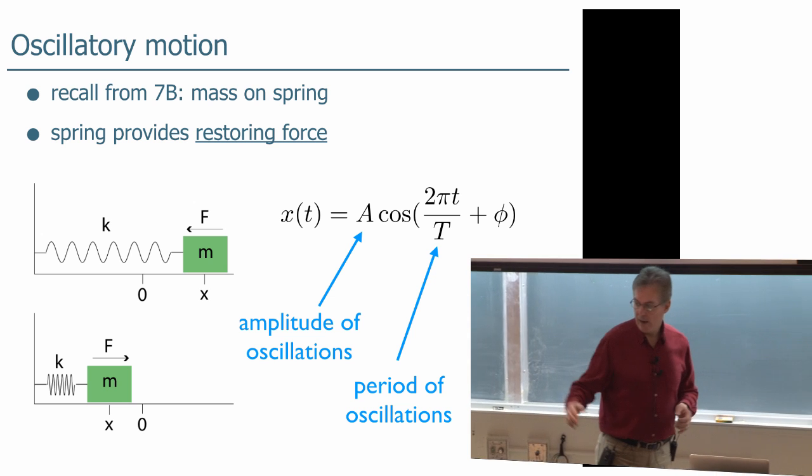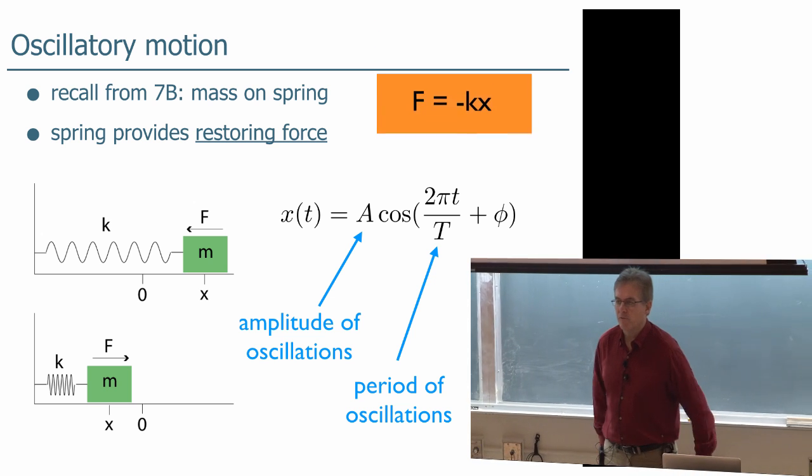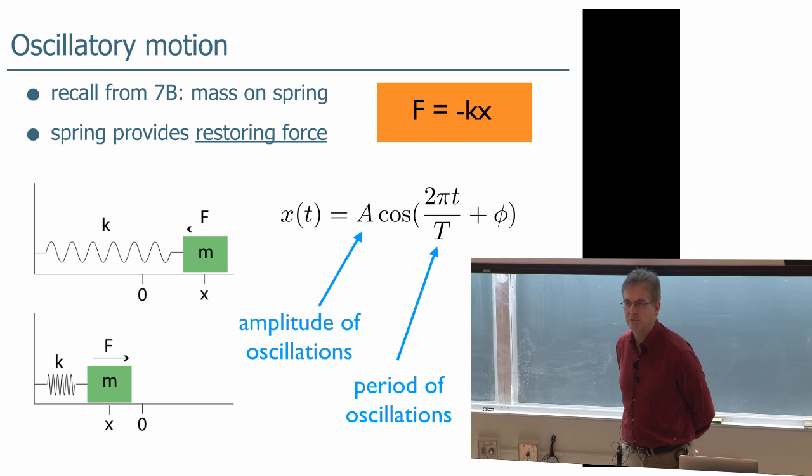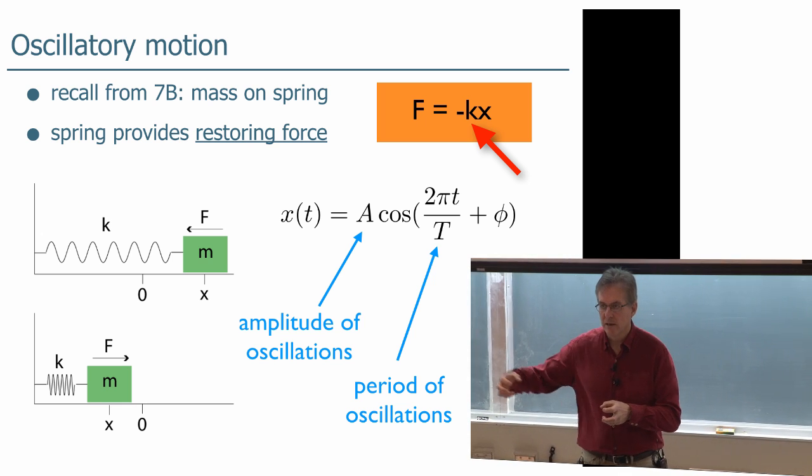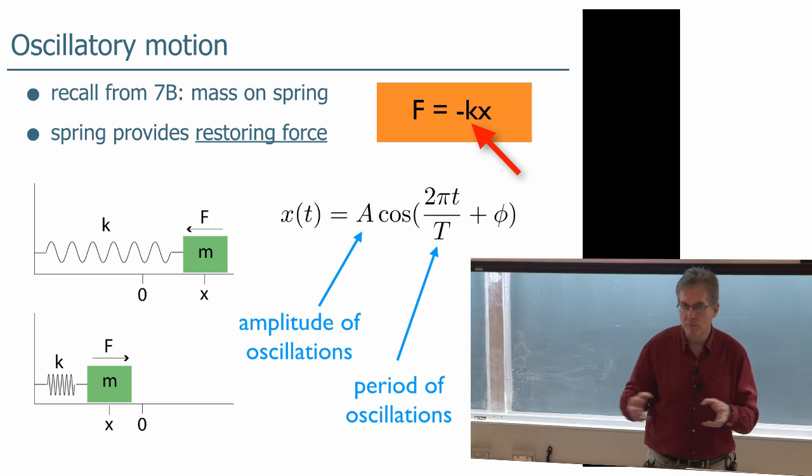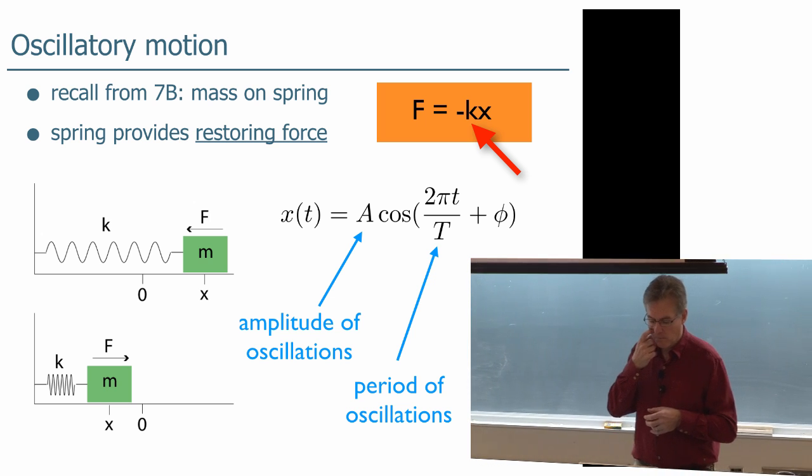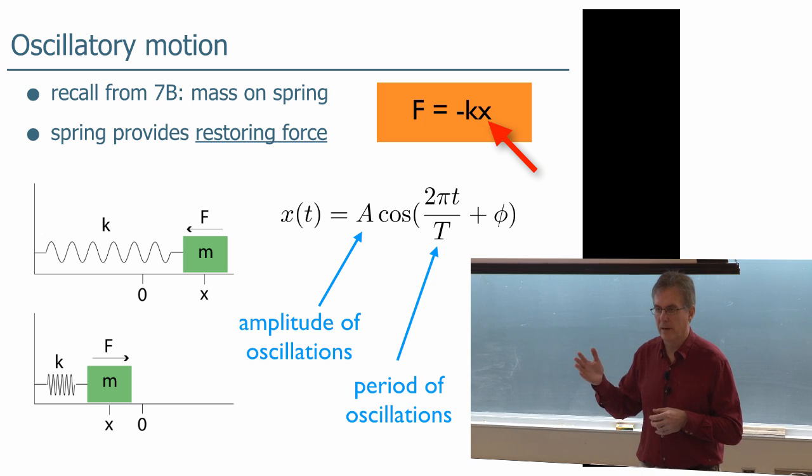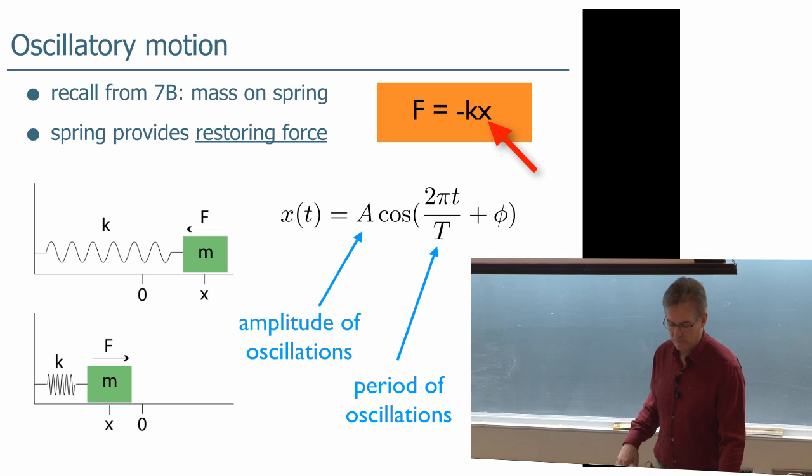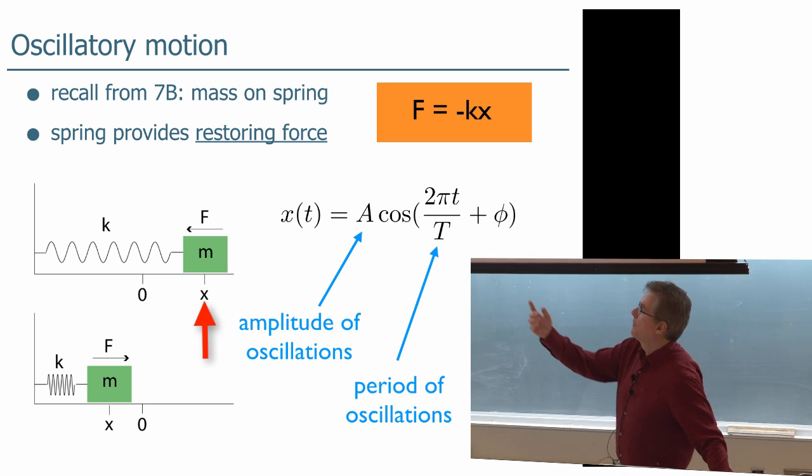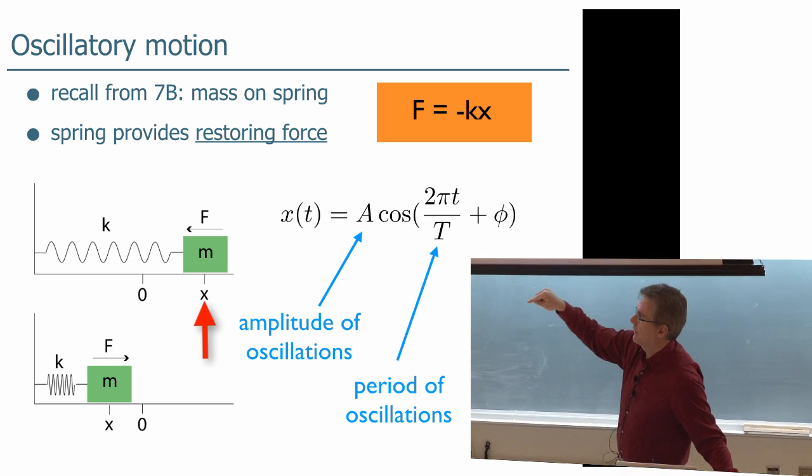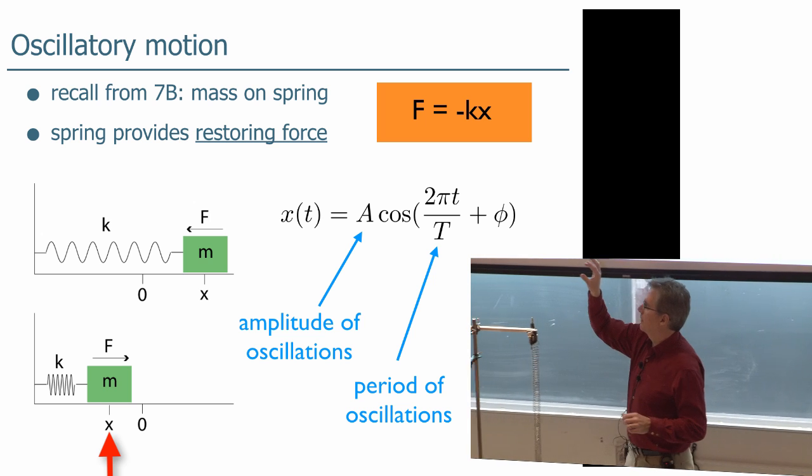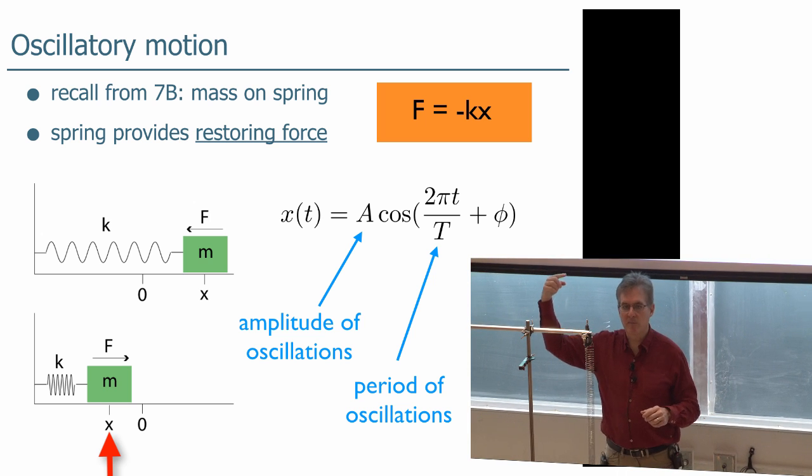Starting with oscillatory motion, you remember that if you've got a mass on a spring, it has a restoring force F = -kx. K is the spring constant and tells you how strong the spring is—how much force it has given how much you've pulled on it or compressed it. X is the coordinate of the mass, where it is in space. If we move the mass to the right, it has a value x, and the force is -kx pointing to the left. If we move the mass to the left, the force is to the right. That's what we mean by a restoring force.